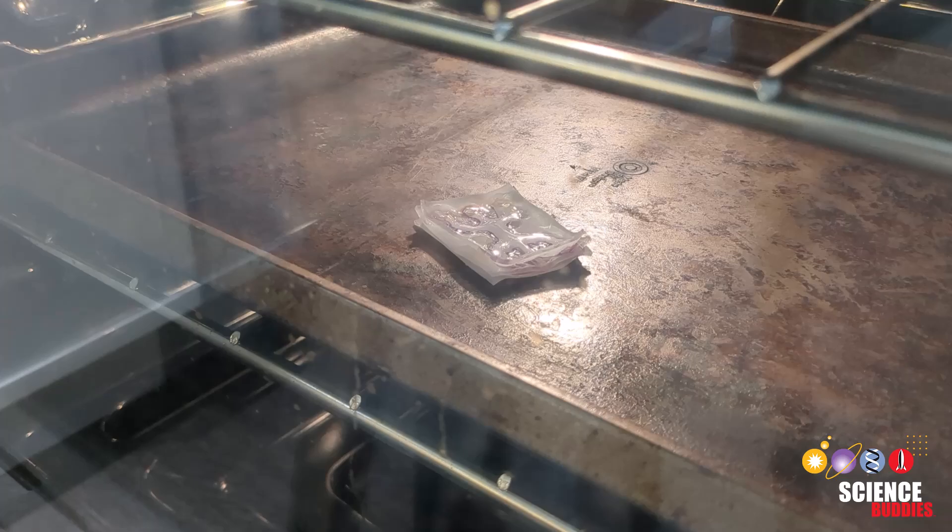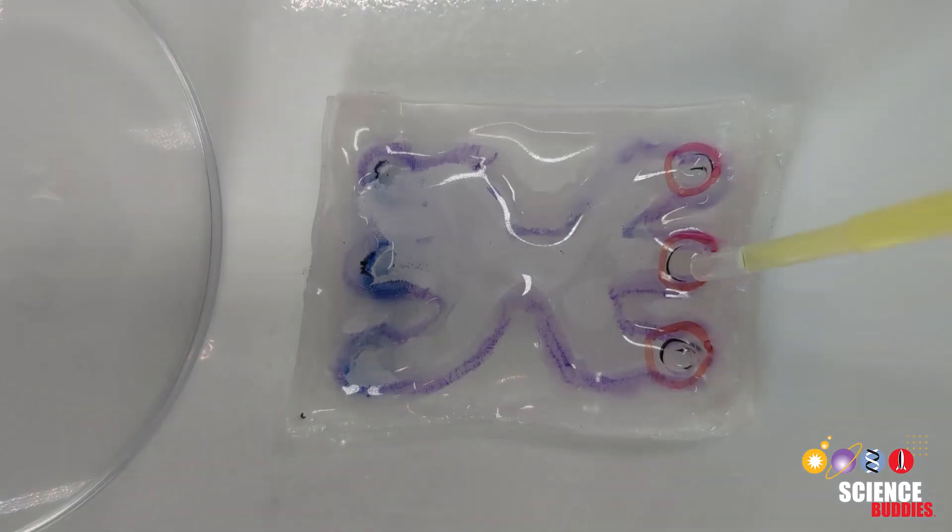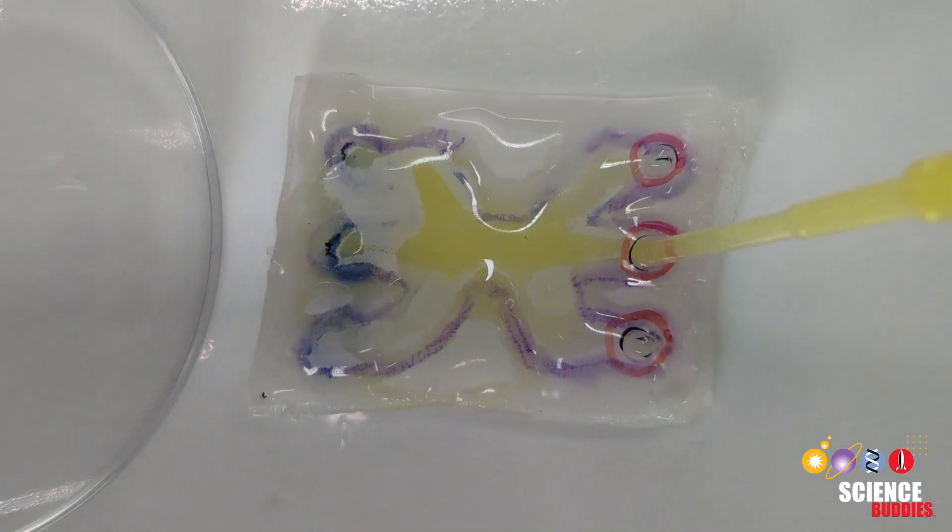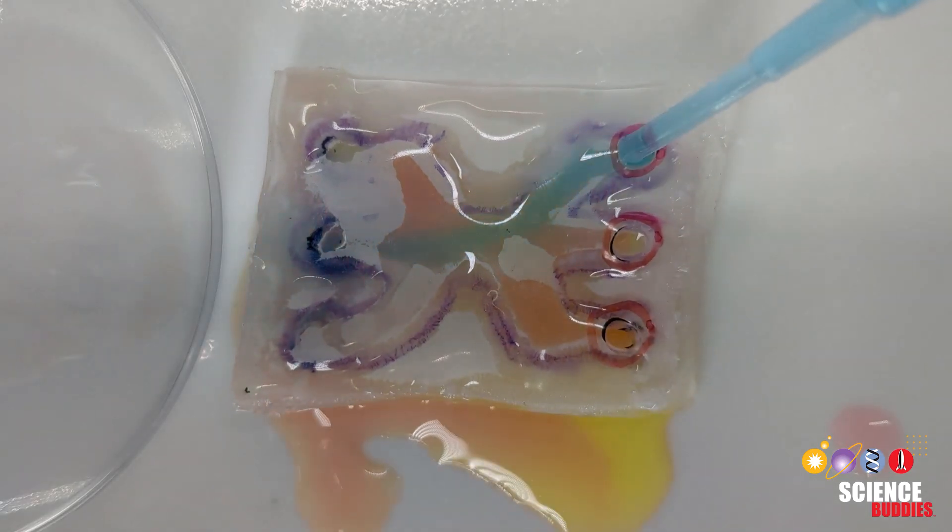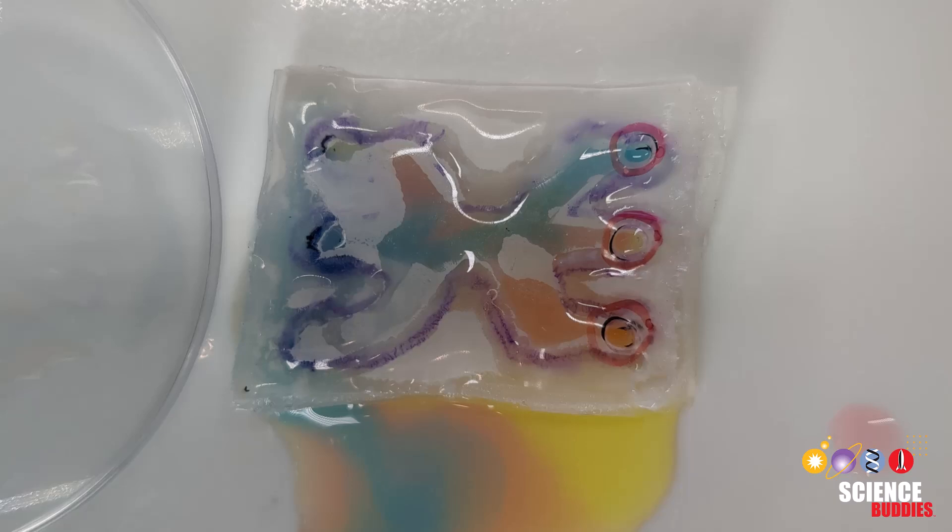How quickly did your microfluidic device shrink? After your device fully cools, you can test if the channels allow fluid through them using diluted dye. You can even use different colors to observe how they mix in the channels.